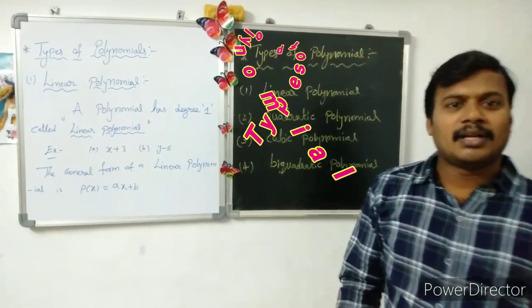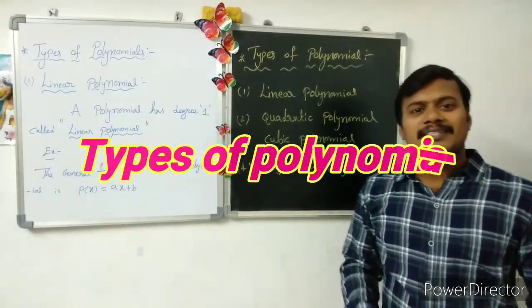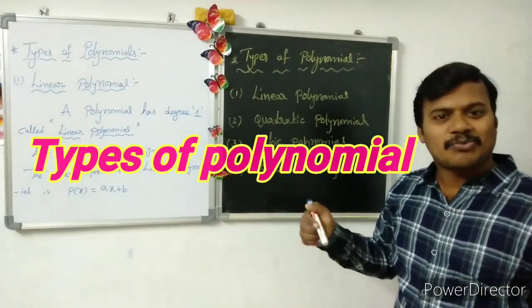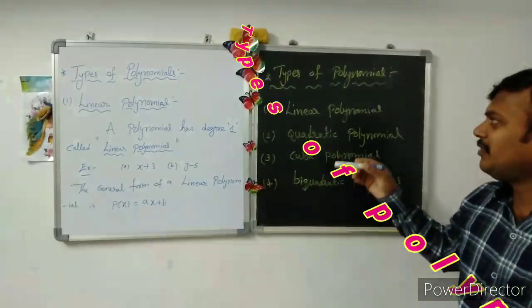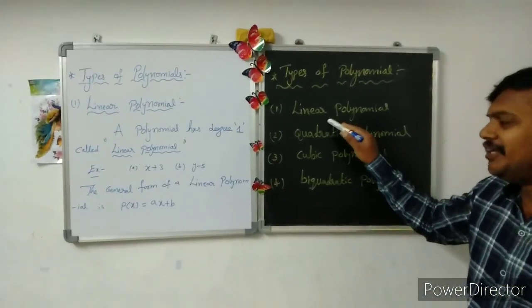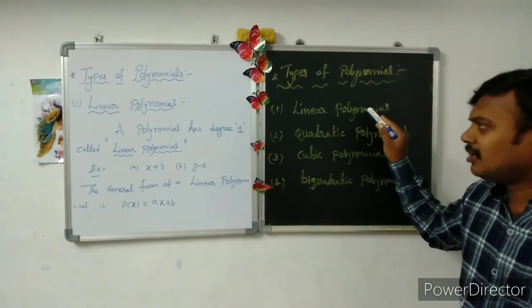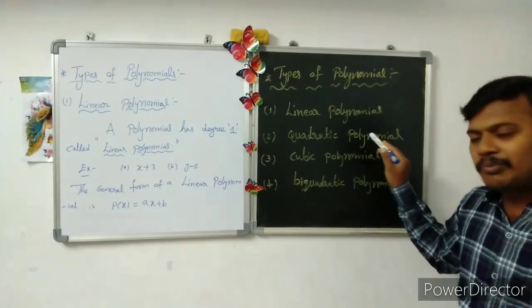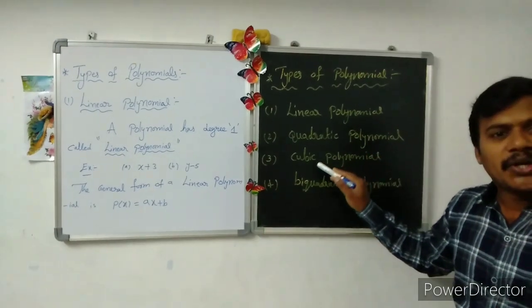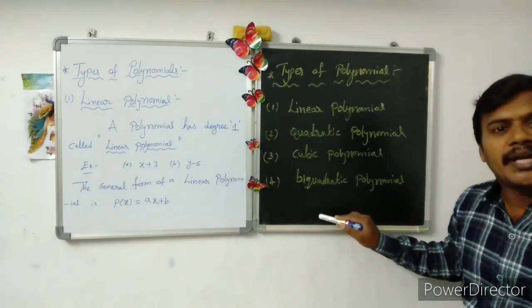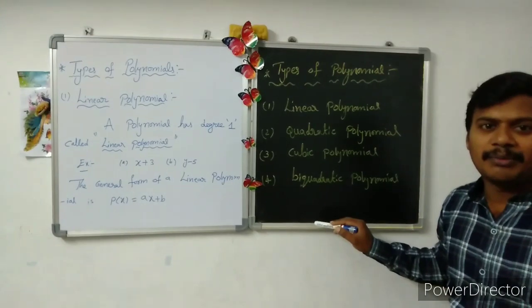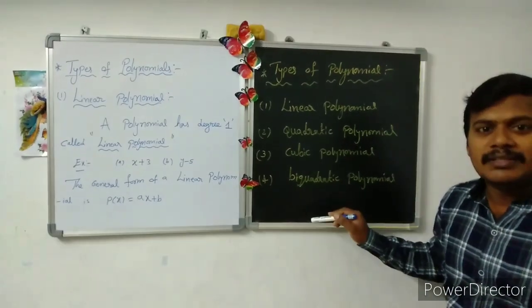Now let us discuss the types of polynomials. We have linear polynomials, quadratic polynomials, cubic polynomials, and biquartic polynomials.